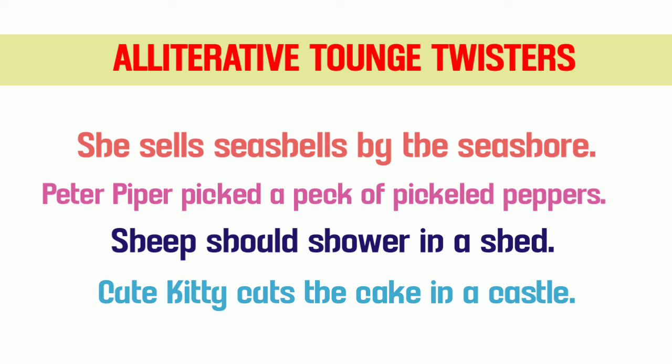Do words hone chahiye — agar do word ka bana rahe ho to do hi word ho sakta hai, ek ka nahi maana jayega. Third example: 'Sheep should shower in a shed' — sheep mein 'sh', should mein 'sh', shower mein 'sh', shed mein 'sh'. Aur yeh — 'Cute kitty cuts the cake in a castle' — yahan 'c' aur 'k' ka sound same nikala.